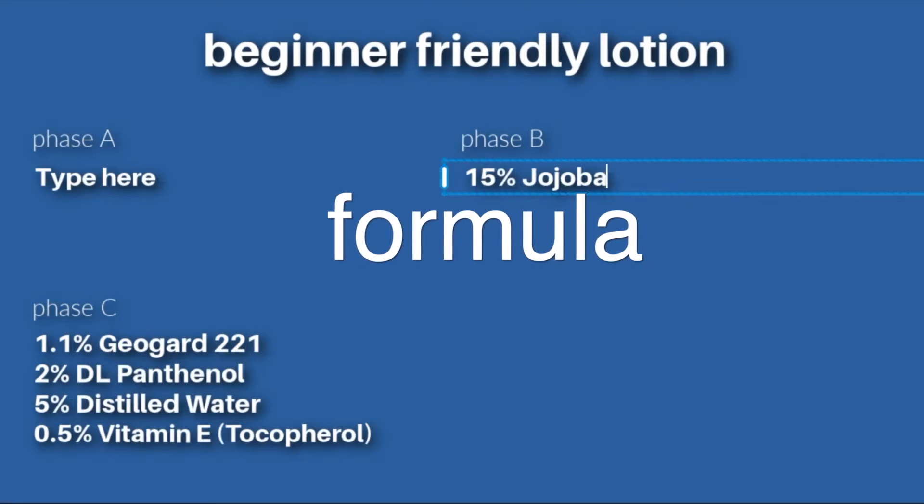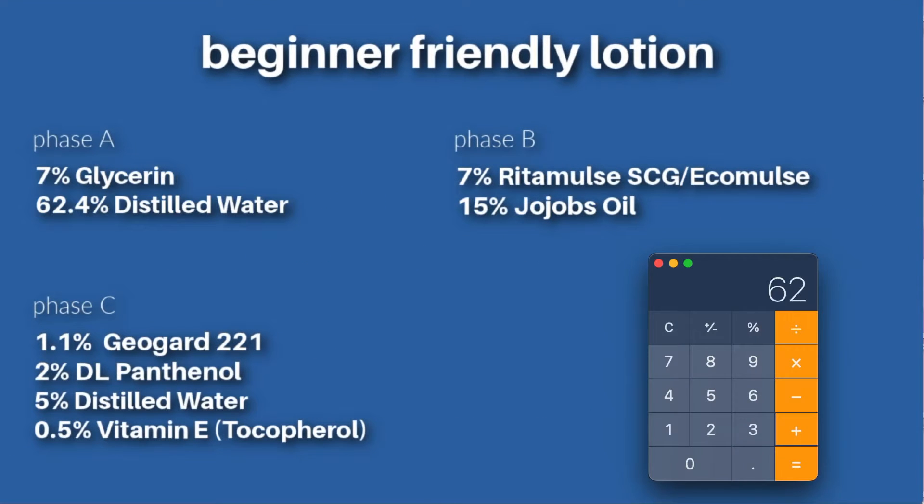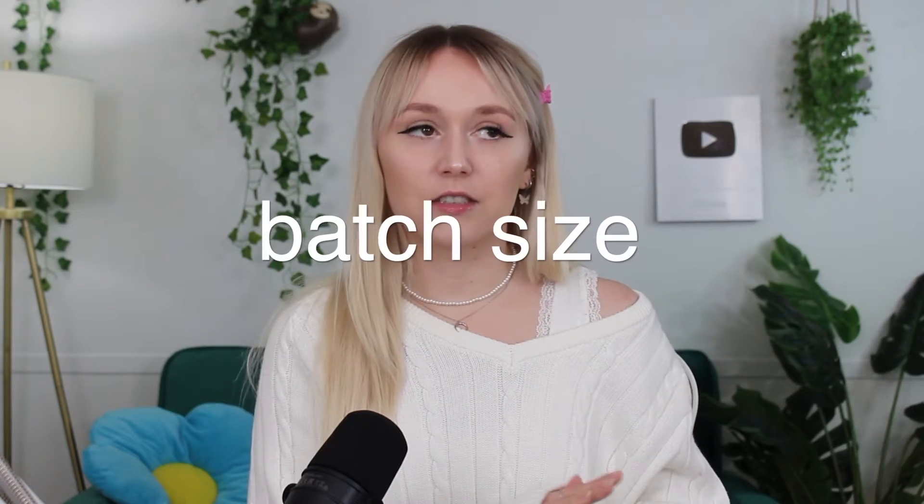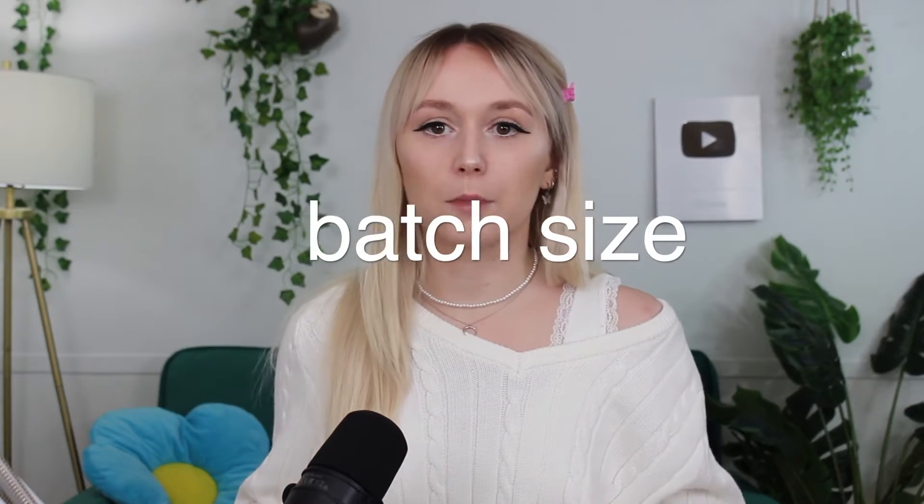Formula is the first thing you create for your product, and that formula needs to add up to 100%. The batch size is the total amount of product you want to make, and this is in grams. The recipe is written in grams, and you create your recipe after you have created your formula and chosen your batch size.